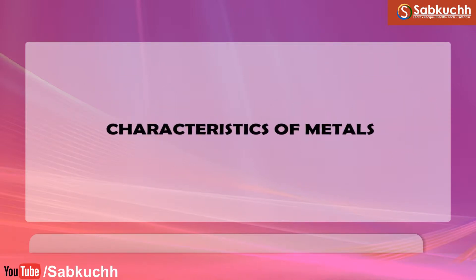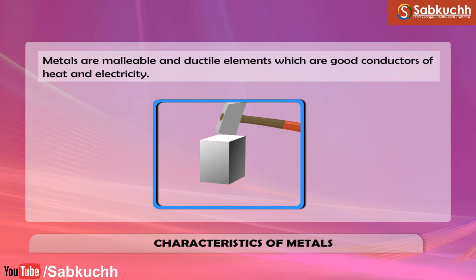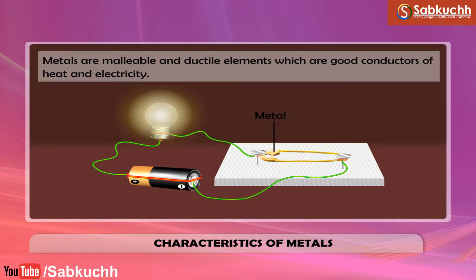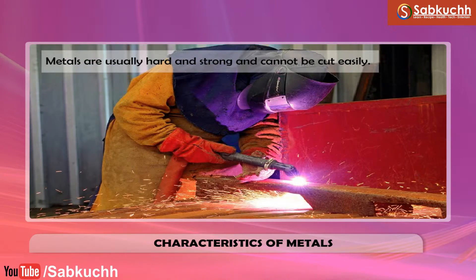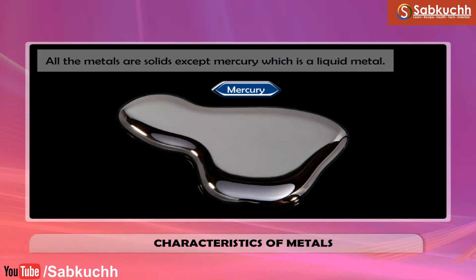Characteristics of Metals. Metals are malleable and ductile elements which are good conductors of heat and electricity. Metals are lustrous or shiny. Metals are usually hard and strong and cannot be cut easily.